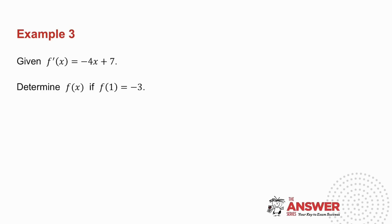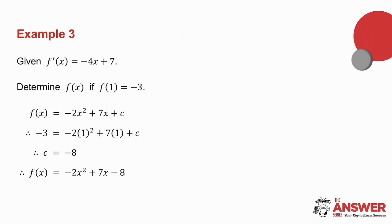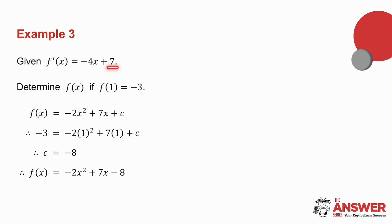Example number three. I want you to pause the video, try this yourself, and then we'll do it together. I've given you the derivative, so we need to work backwards. The derivative is minus 4x plus 7. The derivative of minus 2x squared gives minus 4x, and the derivative of plus 7x gives plus 7. So the derivative of this part is minus 4x plus 7. Since the derivative of a constant is zero, I add a plus c on the end.